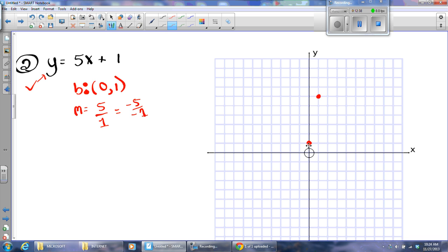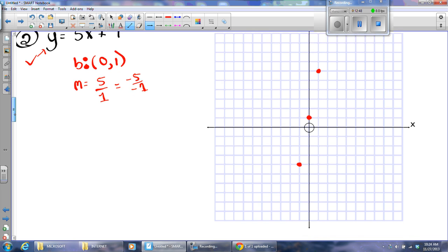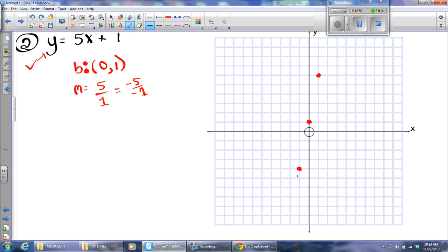Then, I could go down one, two, three, four, five, and back one. Now, I only need two points to draw the line. But, as a human, I tend to make mistakes and not be perfect. And so, therefore, I like to use three or four points so I can get a prettier line. It'll be more accurate.